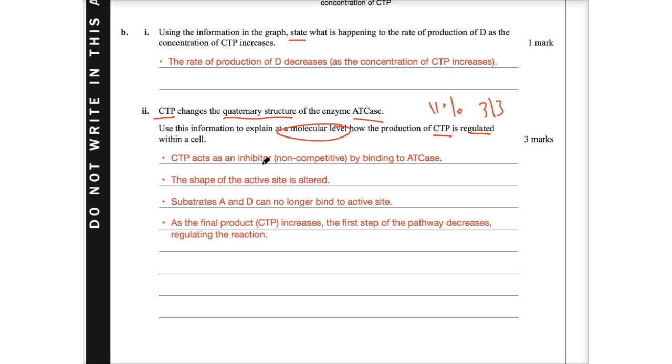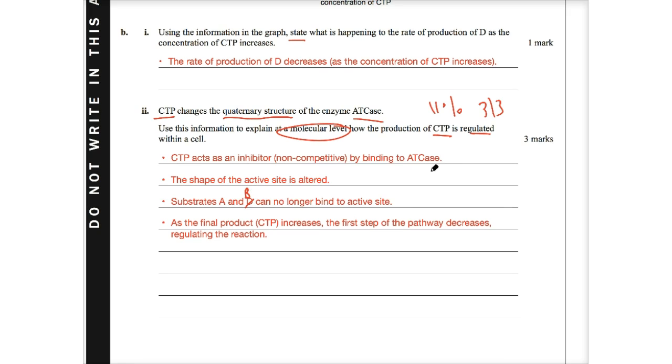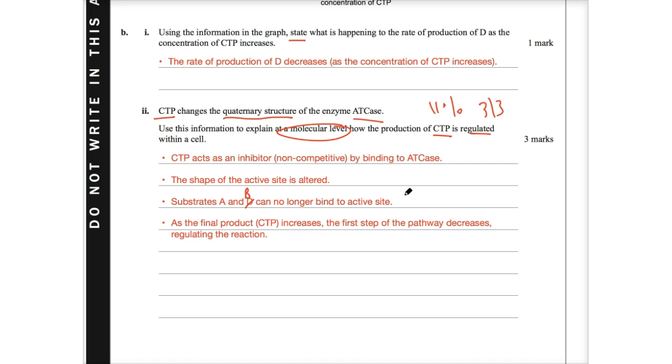So the logic that I've actually stepped out here is as follows. First and foremost, we want to state what CTP is acting as. And CTP is acting as an inhibitor. I put in brackets, non-competitive by binding to ATCase. What is the consequence of that? Okay, if it's an inhibitor, it actually alters the shape of the active site. And so I've gone and say the shape of the active site is altered. If the shape of the active site is altered, that means the substrates A and D, well, that's meant to be A and B, can no longer bind to the active site. Let's just make that different. A and B can no longer bind to the active site to produce D.